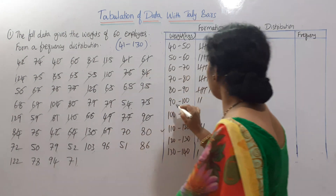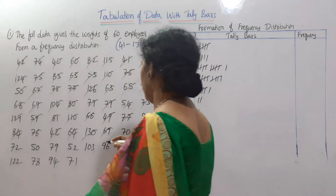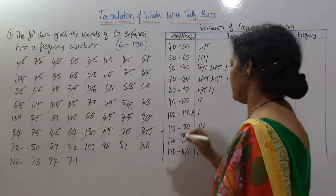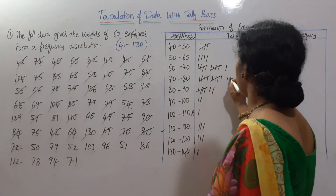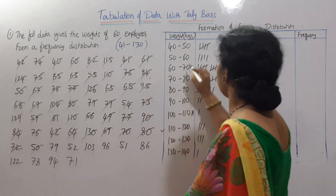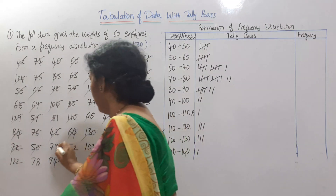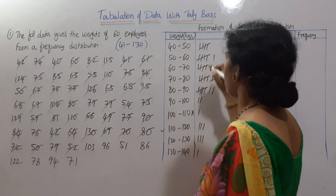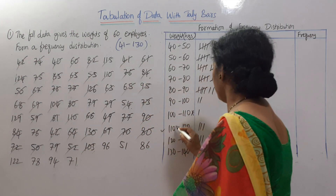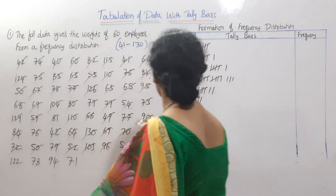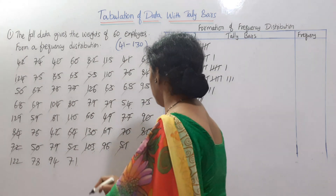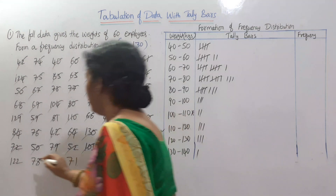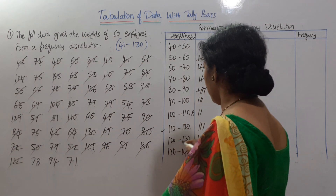69 falls in 60 to 70. 70 to 80 interval continues. 80 falls in 80 to 90. 72 falls in 70 to 80. 50 falls in 50 to 60. 79 falls in 70 to 80. 52 falls in 50 to 60. 103 falls in 100 to 110. 96 falls in 90 to 100. 51 falls in 50 to 60. 86 falls in 80 to 90. 112 falls in 110 to 120. 122 falls in 120 to 130.